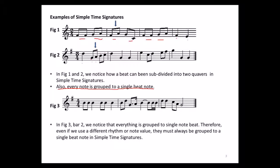Figure three is in four-four time, which is simple quadruple time, where we have four crotchet beats. In figure three bar two, everything is grouped to a single beat note. The first beat, the second beat — we have a dotted quaver with a semiquaver, which equals one crotchet.